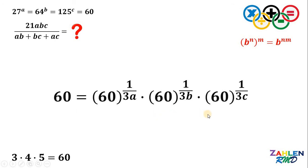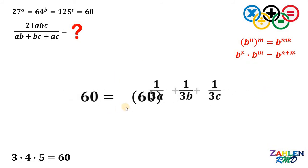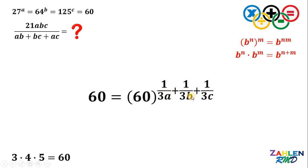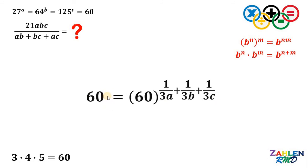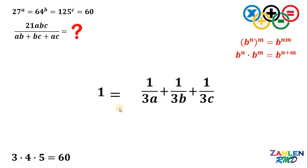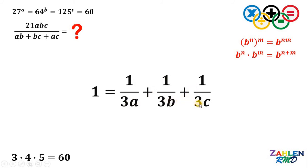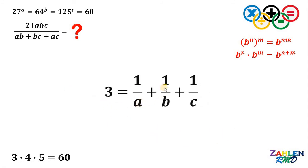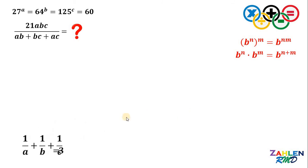Next, let's recall some laws of exponents. If we have b raised to n times b raised to m with the same base, it equals b raised to n plus m. Therefore, the right-hand side becomes 60 raised to 1 over 3A plus 1 over 3B plus 1 over 3C. Since the exponent of 60 on the left is just 1, and the bases are equal, therefore 1 must equal 1 over 3A plus 1 over 3B plus 1 over 3C. Multiplying the whole equation by 3, we get 3 equals 1 over A plus 1 over B plus 1 over C. Let's set aside this result — we will use this later.